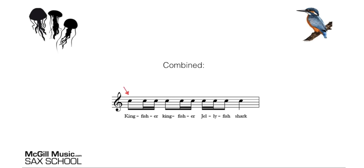Let's put those into a piece of music. On the first beat we've got kingfisher, then another kingfisher, then we've got a jellyfish, and we'll finish it off with a shark. Let's try it in tempo — here we go: kingfisher, kingfisher, jellyfish, shark. You can see again from the rhythm of the words, we've got the rhythm of the music.